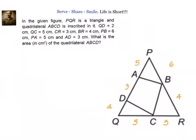Now, what is our approach to solve this problem? If you observe, PQ equals PR, which means this triangle is an isosceles triangle. That means with respect to QR, we can easily find out the height of the triangle. Once we find the height with respect to base QR, we can solve this problem by drawing parallel lines to QR, finding areas and subtracting from the total area of triangle PQR.